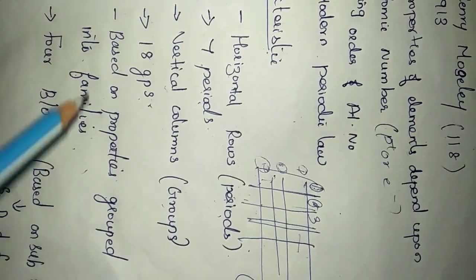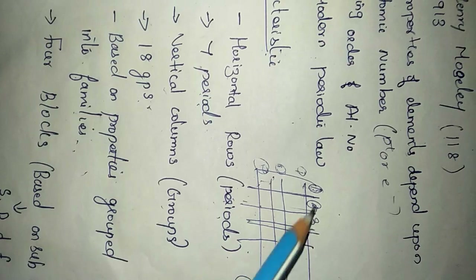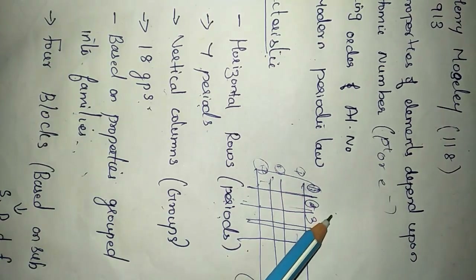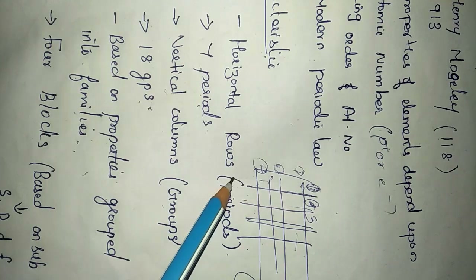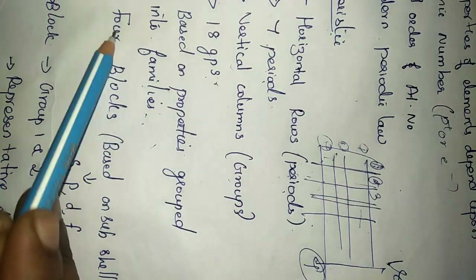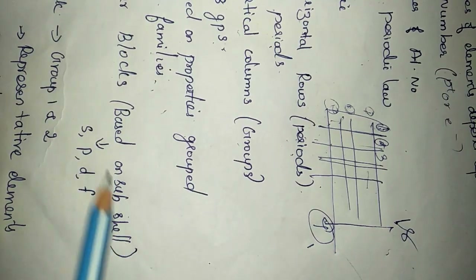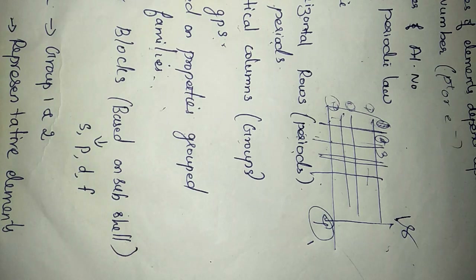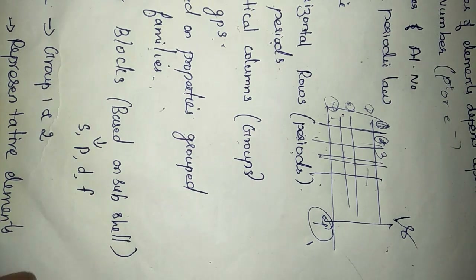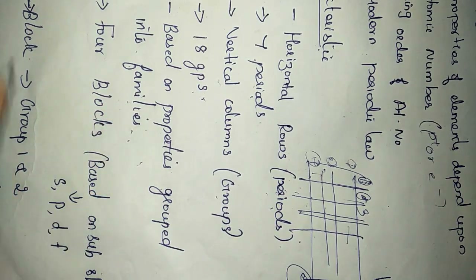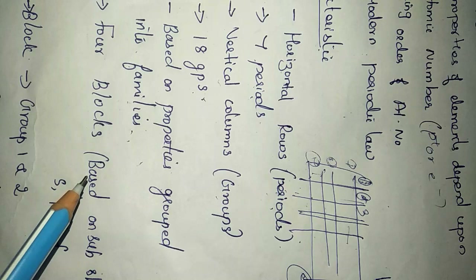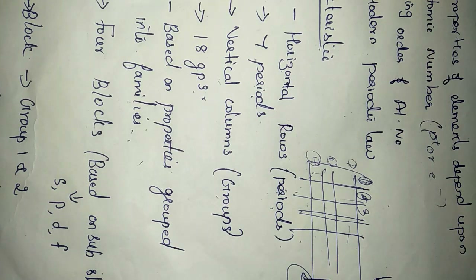For example, in the first group, hydrogen is a non-metal; the remaining elements are all metals with the same chemical properties. The table also has four blocks based on the subshells. The main shells are K, L, M, N, and each main shell has subshells: s, p, d, f. Based on these subshells, the table is classified into four blocks: s block, p block, d block, and f block.